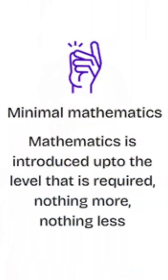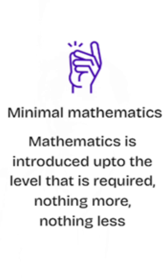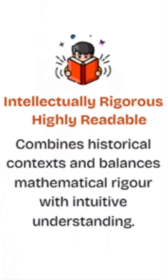Point number three: minimal and selective mathematics. The mathematics is kept simple and only introduces the level of mathematics that is required. Point number four: it is intellectually rigorous but highly readable because it combines historical context, intuitive analogies, and clear explanation, balancing mathematical concepts with a clear intuitive understanding.